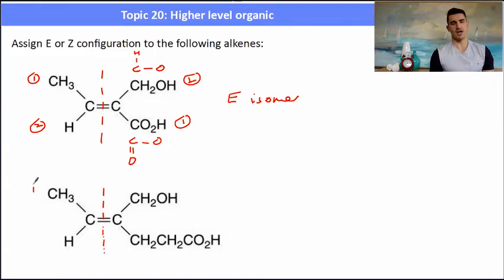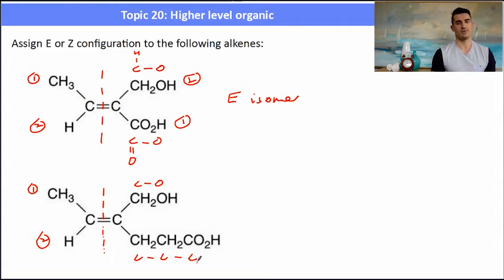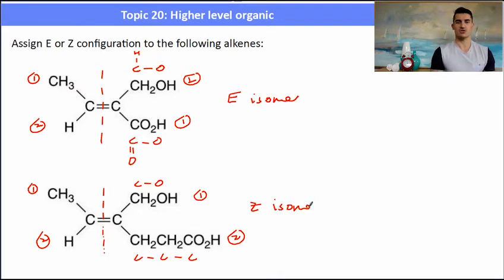In the second example we do the same thing. The methyl group versus hydrogen is the easy part. For the other side, we have a carbon-oxygen bond versus a carbon-carbon-carbon chain. Even though that's a longer chain, we refer back to atomic number: oxygen has a higher atomic number than carbon, so the CH₂O group actually takes precedence over the longer carbon chain. That makes this the Z isomer.